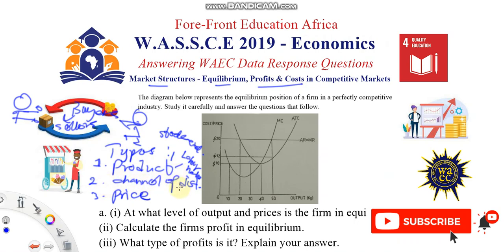Markets can also be categorized by channel of distribution — for example, wholesale markets and retail markets. When we consider price, there are two main groups with subgroups: perfect markets and imperfect markets. In perfect markets, buyers or sellers cannot influence the price — that's a key thing to know.